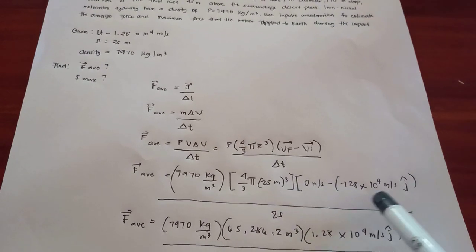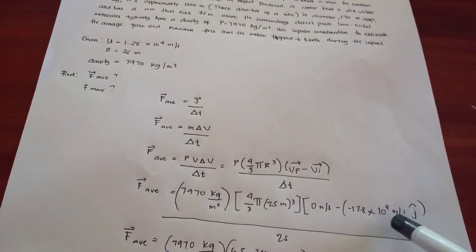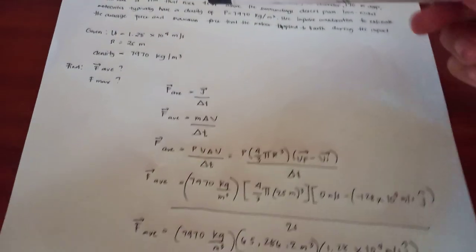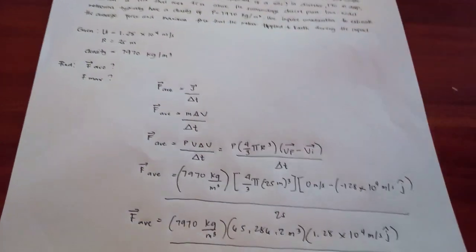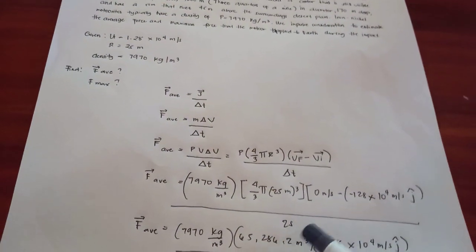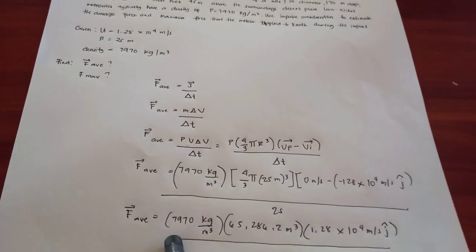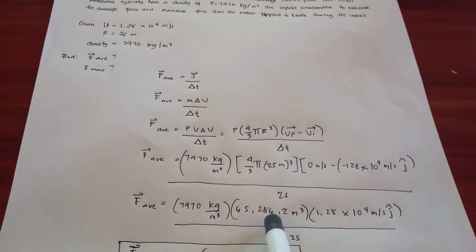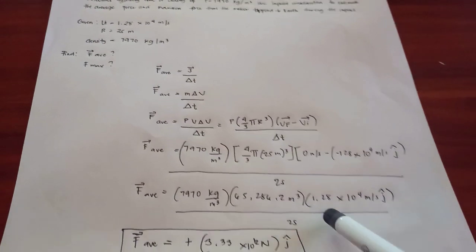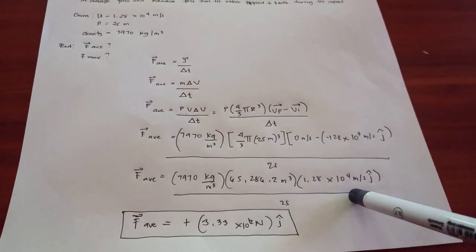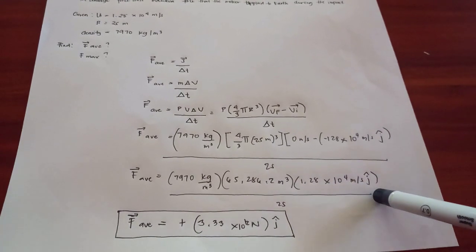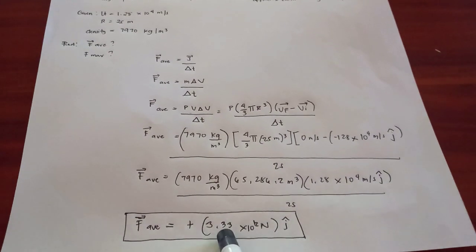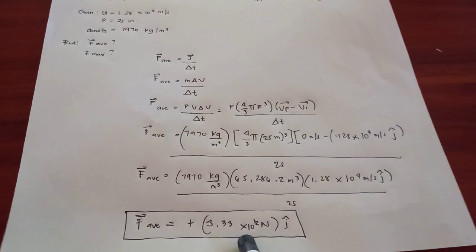So 7,970 kilograms per meter cubed times four-thirds pi times 25 meters cubed times 0 minus negative 1.28 times 10 to the fourth power meters per second over 2 seconds, which is 7,970 times 65,286.2 meter cubed times 1.28 times 10 to the fourth power meters per second. So the final average is equals to positive 3.33 times 10 to the 12th power newtons.